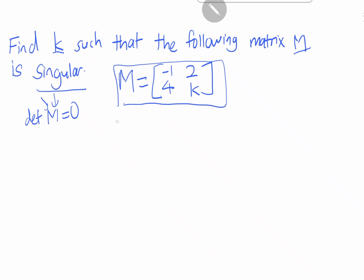Let's do it here. So the determinant of M equals to zero. Therefore, we can write it in this way for the determinant equals to zero.